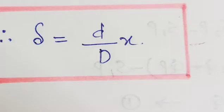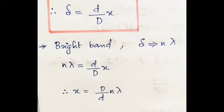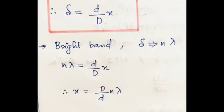For bright band condition, the path difference delta is equal to n lambda. Substituting into the equation, delta equals (d/D)·x, therefore x equals (D/d)·n lambda. Using n = 1, 2, 3 gives the positions of the bright bands.